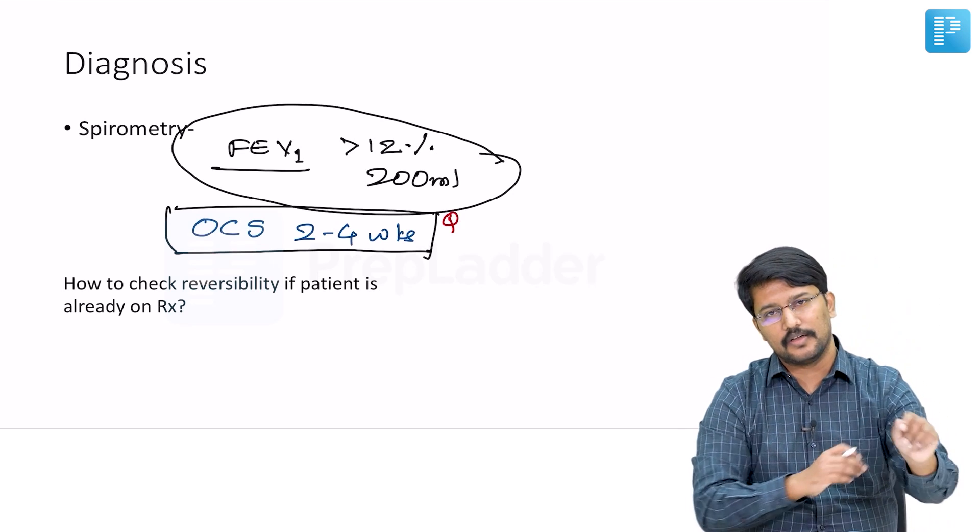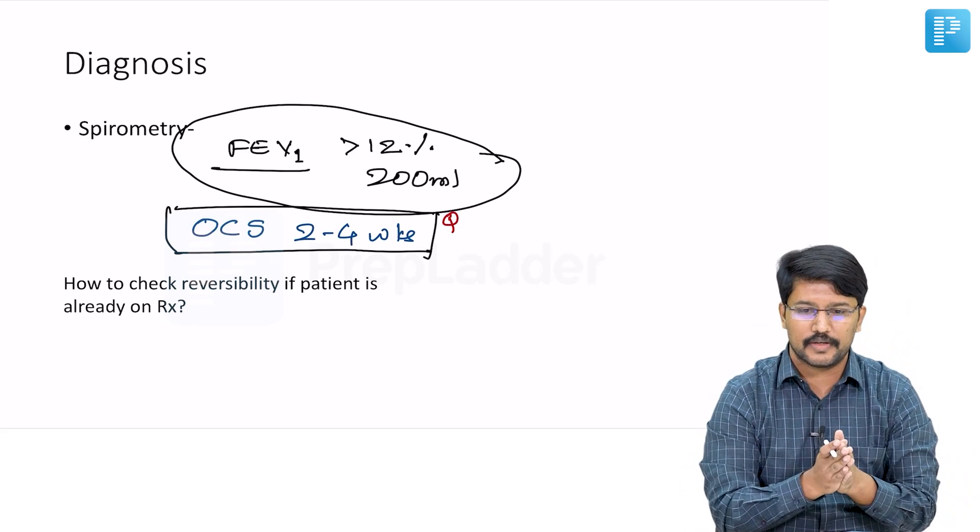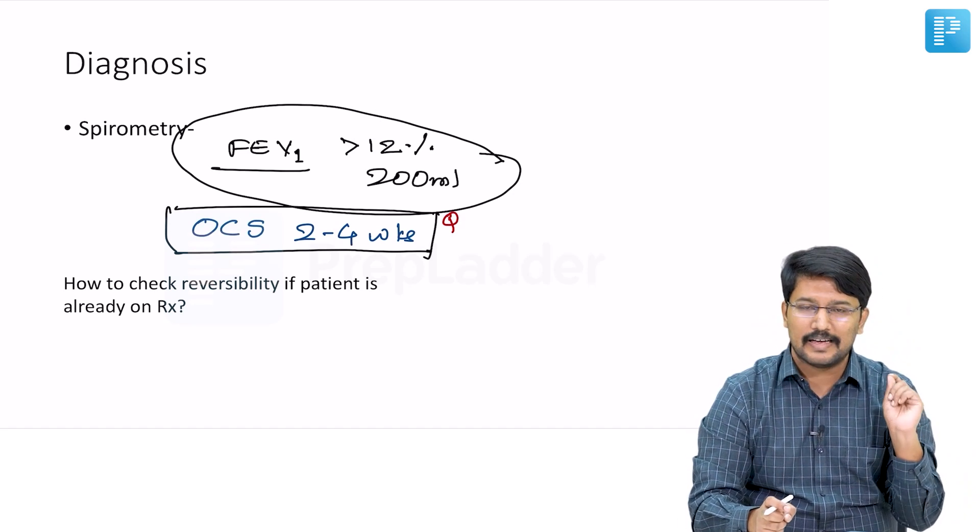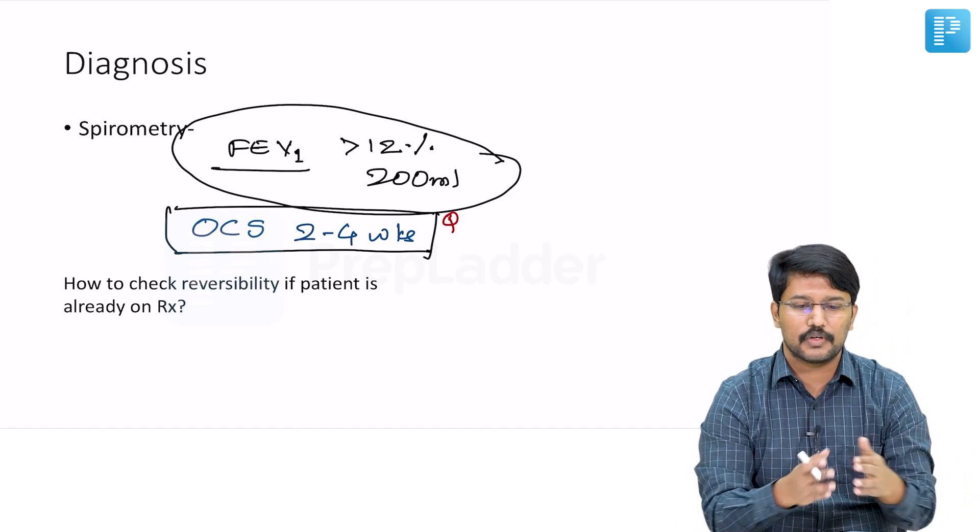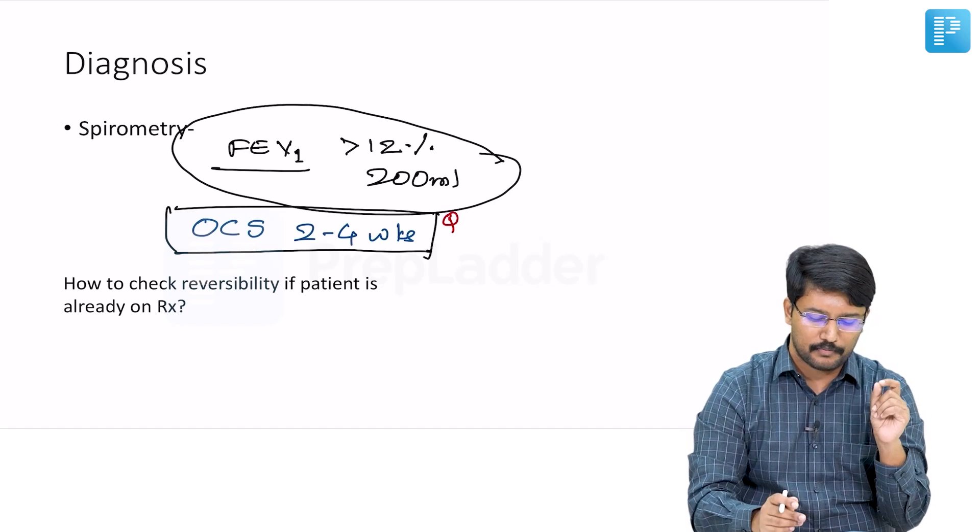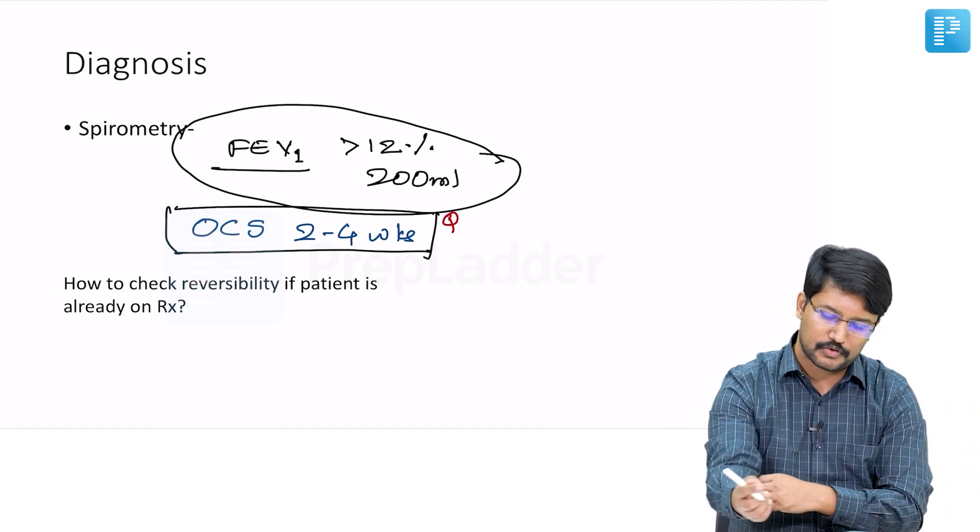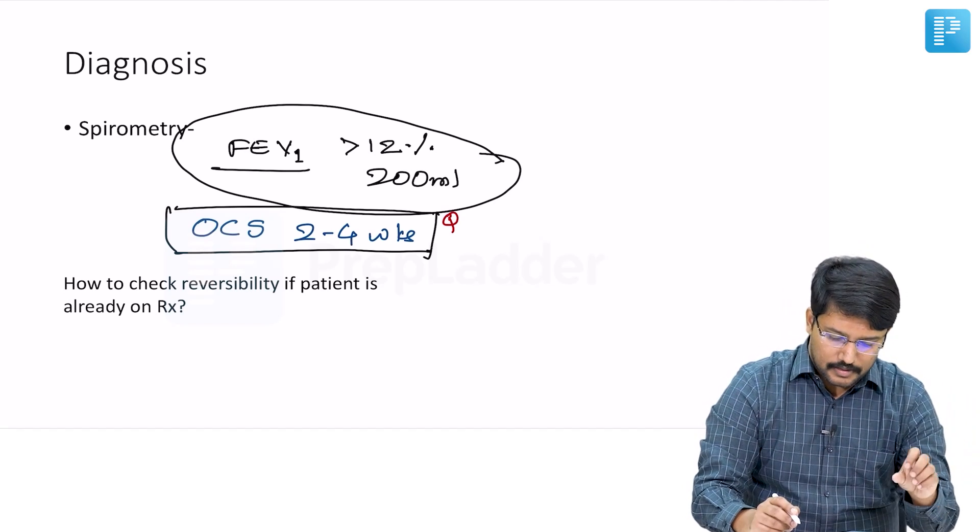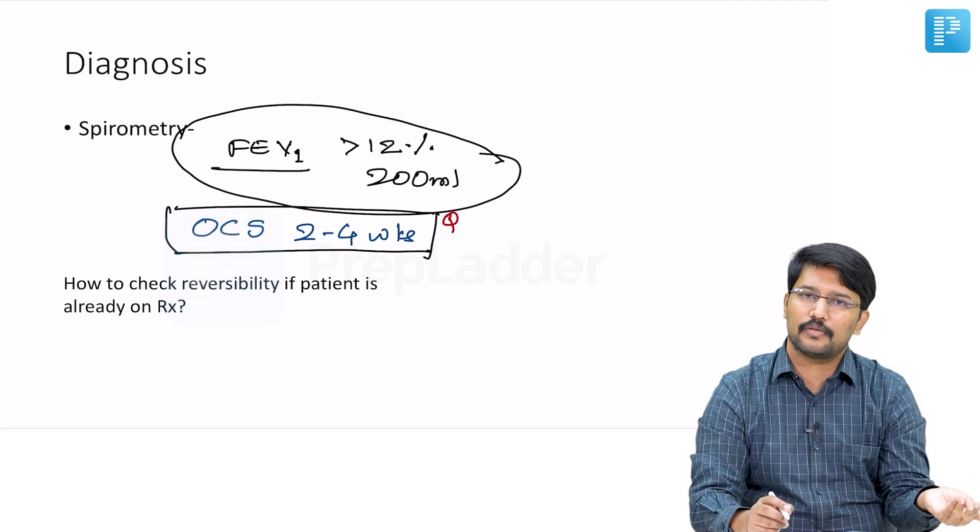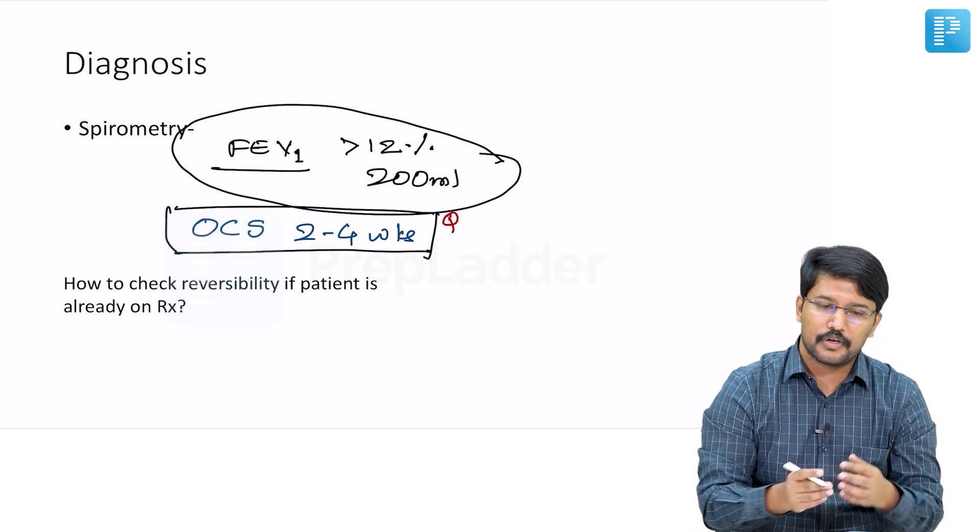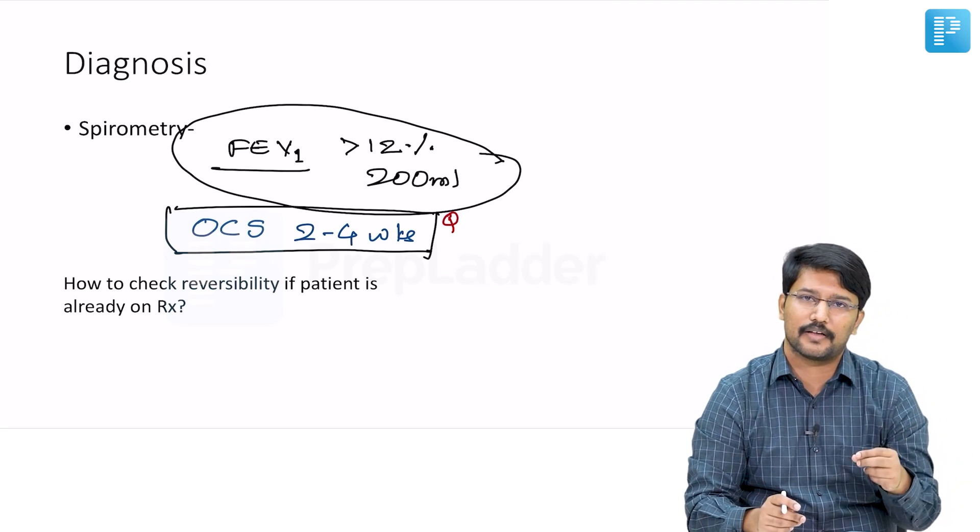If they throw an MCQ where they say 1 week of oral corticosteroids and there is no demonstration of reversibility, then asthma is ruled out—no. You have to give them for at least 2 to 4 weeks and then reassess. If a patient is already on treatment, then how would you confirm the diagnosis?